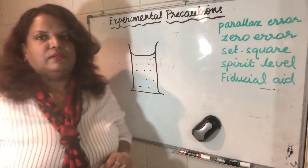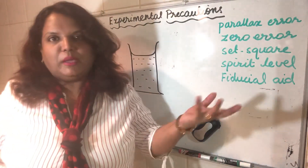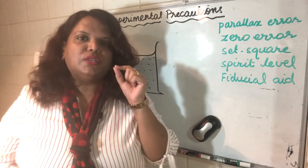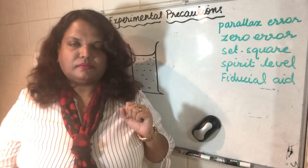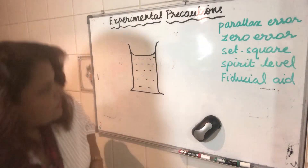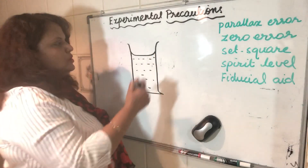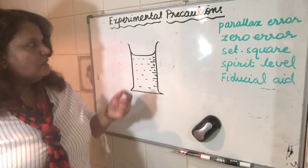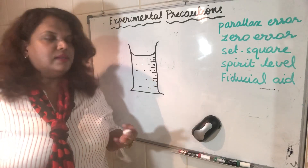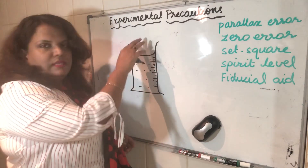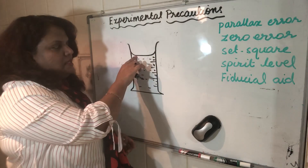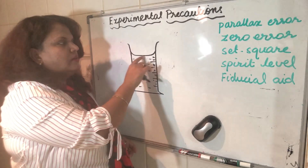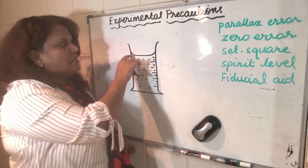First, parallax error. It's an error that occurs due to the positioning of your eye level. I'll explain it with a measuring cylinder example. The cylinder has calibration marks on the sides, and you need to record the level that the liquid fills inside. Most liquids will have a downward curvature — a meniscus — while mercury curves upward.